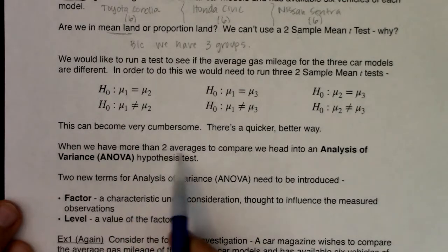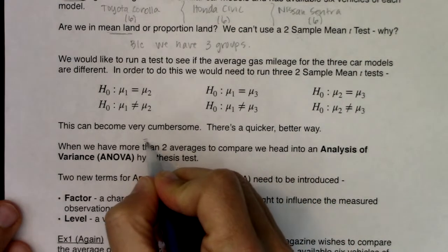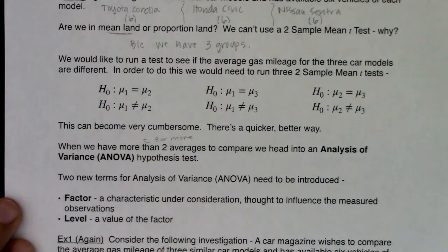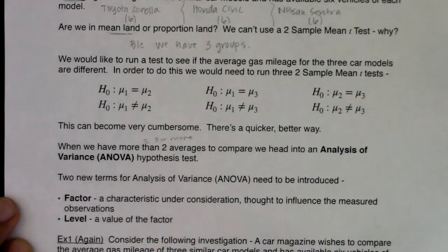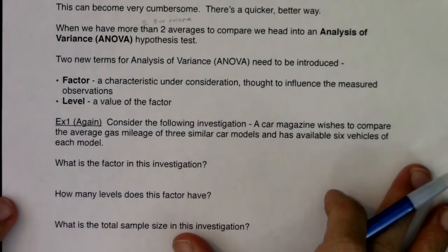And that quicker, better way is something called one-way ANOVA. So we have more than two averages to compare, and when I say more than two that's equivalent to saying three or more. But we have more than two averages to compare, so we're going to run an ANOVA hypothesis test.